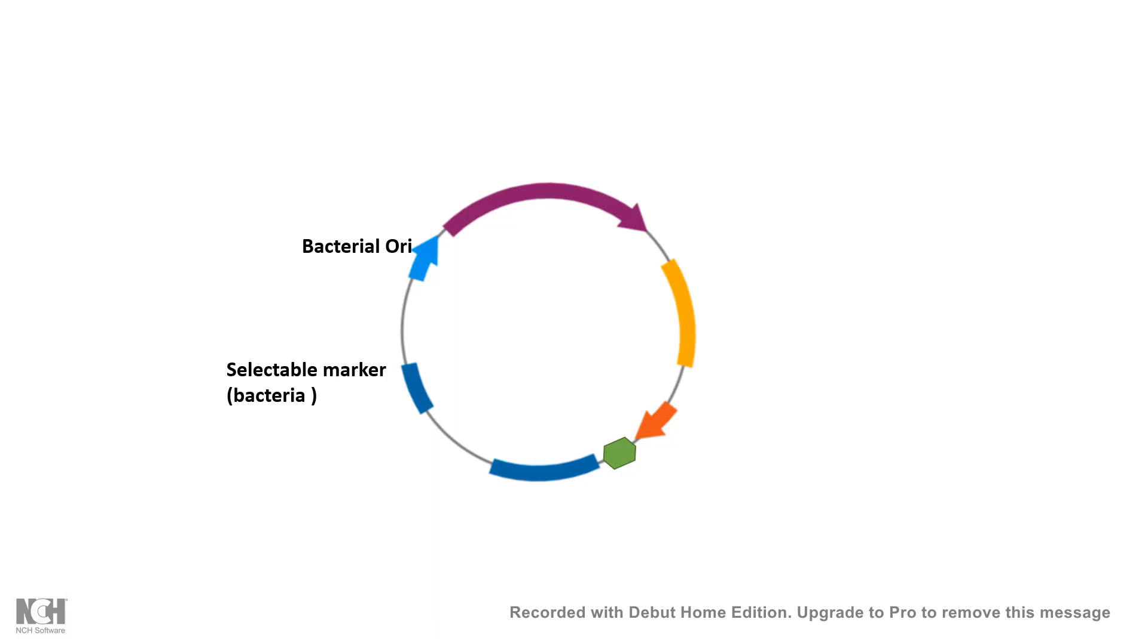Similarly, if it is a bacteria and yeast shuttle vector, it should have yeast Ori as well. It should have yeast selectable markers, let's say some URA3 or something like that. It should also have some sequences like ARS and centromeric sequences which are essential for propagating it inside the yeast.